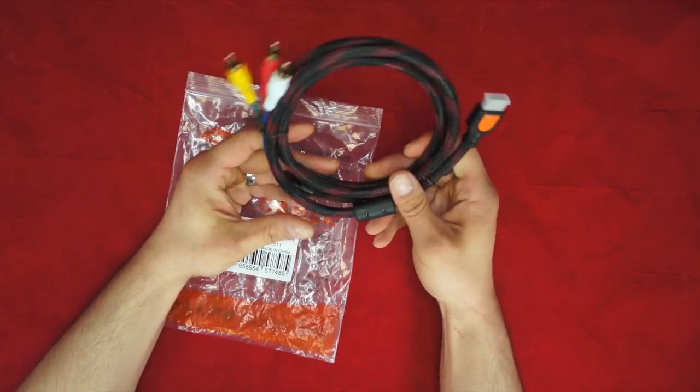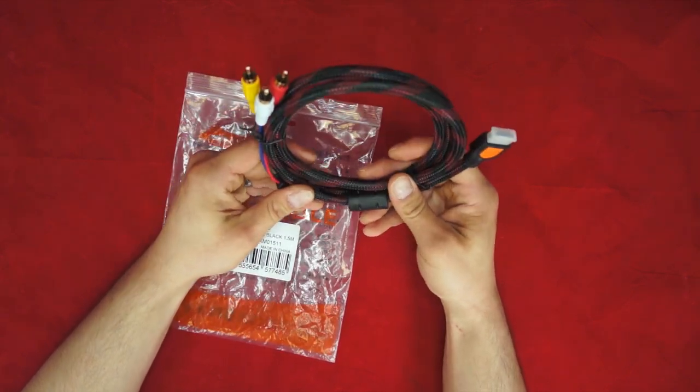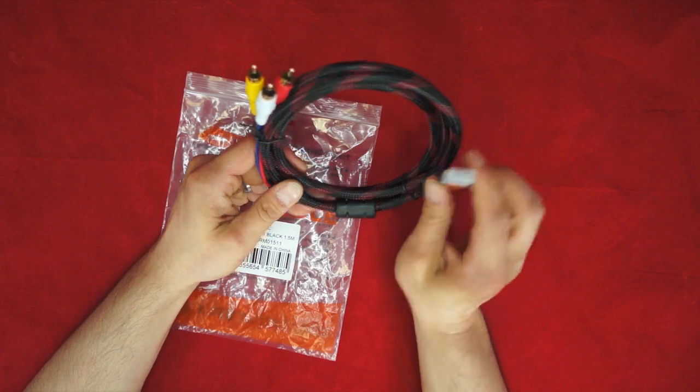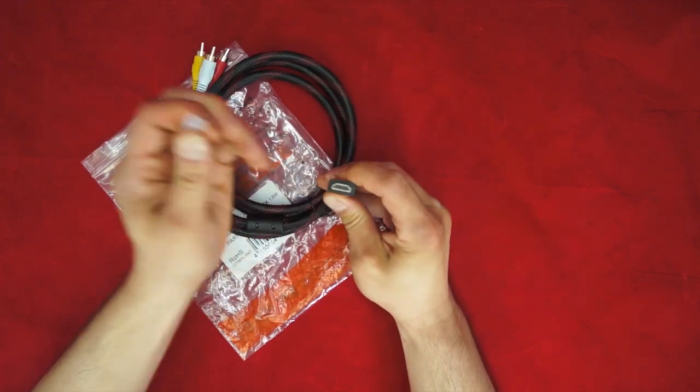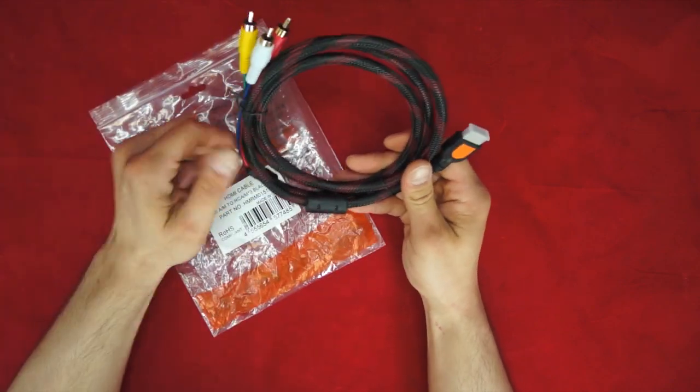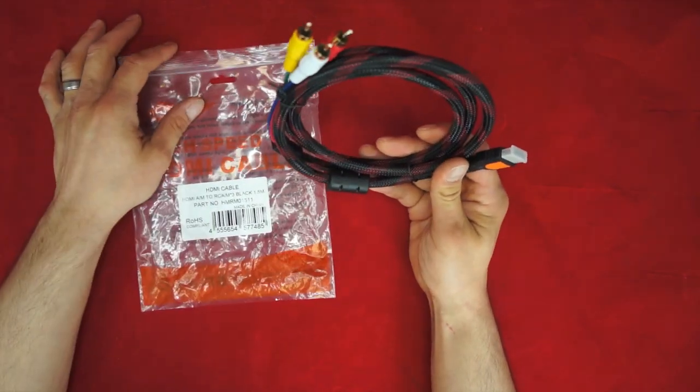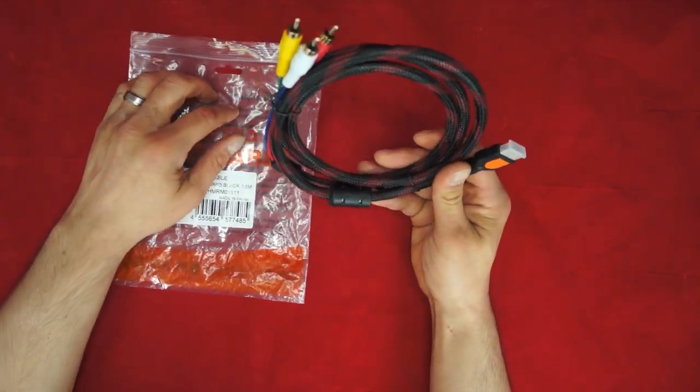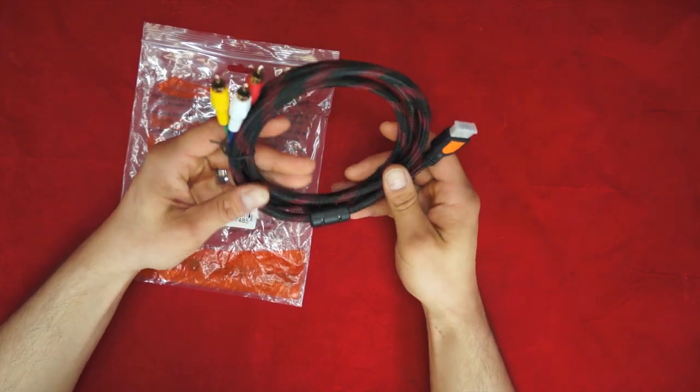A lot of people have an older television, they get home a new DVD player and they're like, my old TV doesn't have any HDMI ports, so I'm going to go to eBay or Amazon and buy the cheapest converter I possibly can. They get it home, they plug it in, it doesn't work and they're like, I got ripped off. This is a scam.